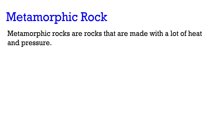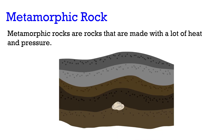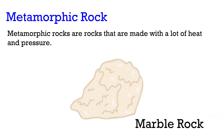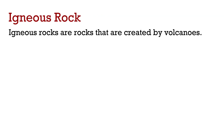Metamorphic rocks are rocks that are made with a lot of heat and pressure. Usually these rocks are found inside of the Earth's crust, where there is enough heat and pressure — a perfect environment for these rocks to be formed. You might have heard of a type of rock called marble; marble is one example of a metamorphic rock.